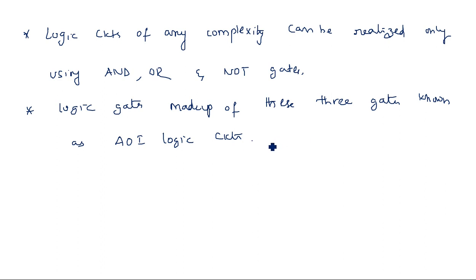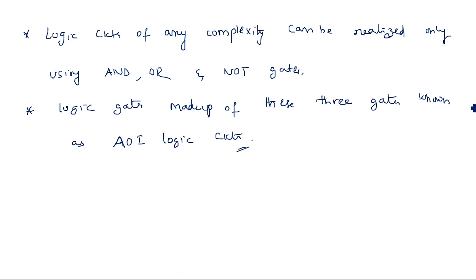Logic circuits which use only AND gates and OR gates are called AO logic circuits. If you are using AND, OR, and inverter — all three — then we call it AOI logic circuits. Depending upon the type of gates used, the circuit is classified as AO or AOI. This is about the NOT gate. In the next video, I will explain about the NAND gate and NOR gate. Thank you.